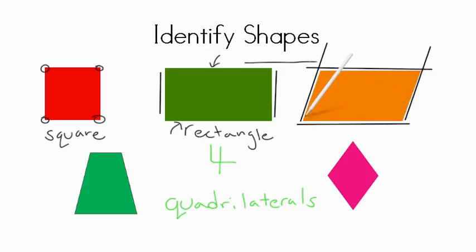But a parallelogram doesn't have right angles. So this rectangle here is a parallelogram that has lines that will not run into each other. But a standard parallelogram does not have right angles. So this is a parallelogram.